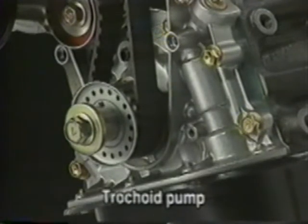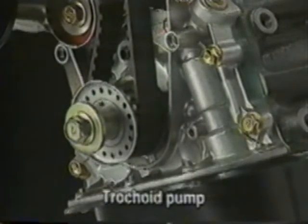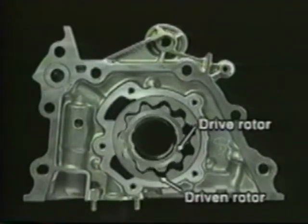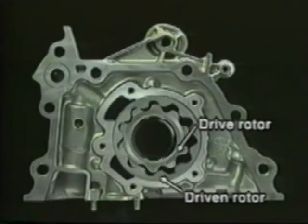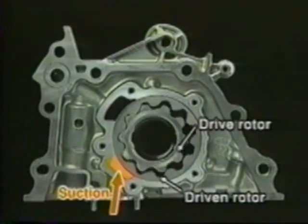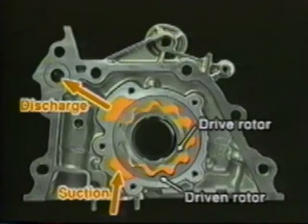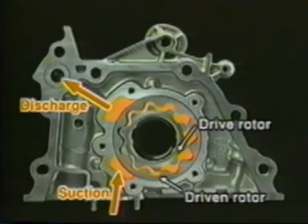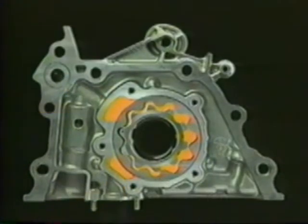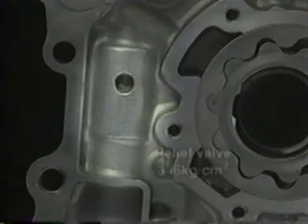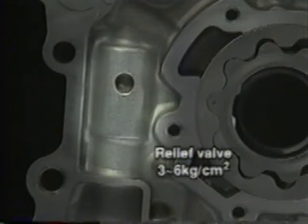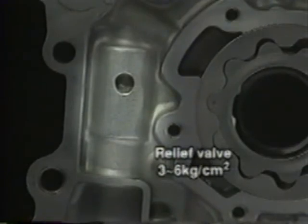A trochoid pump is usually used to pump oil. The drive and driven rotors rotate while interlocked. Since the drive rotor shaft is slightly eccentric, a space is produced between the two rotors as they rotate, and the oil is pressure supplied through this space. The oil pump has a relief valve which adjusts the maximum oil pressure. When the oil pressure reaches a specified value between 3 and 6 kilograms per square centimeter, the relief valve opens to adjust maximum oil pressure.